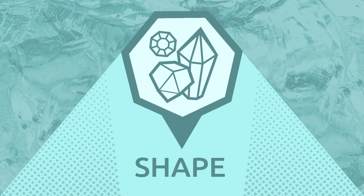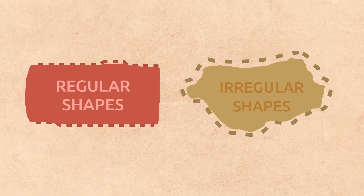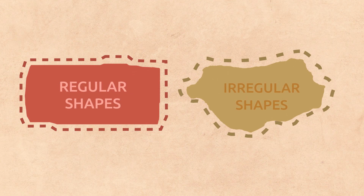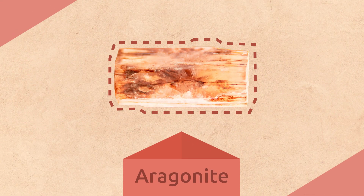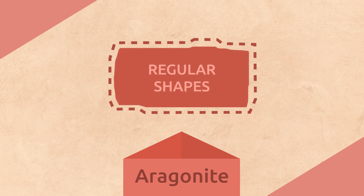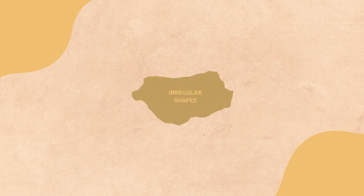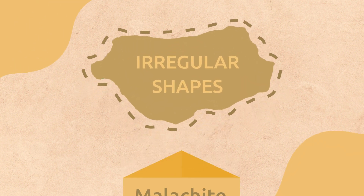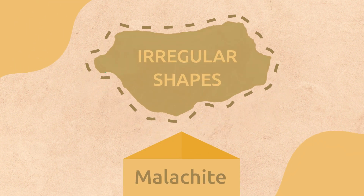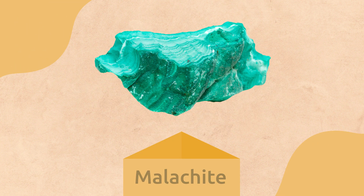Shape: minerals grow into different shapes — regular or irregular. Aragonite has a regular shape, while malachite has an irregular shape. They look beautiful!